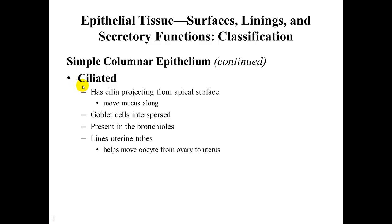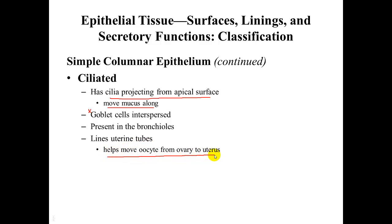The ciliated simple columnar epithelial has cilia projecting from the apical surface and is used for motion — it moves mucus along the surface. Goblet cells produce the mucus. These are often present in the bronchioles and lining the uterine tubes, helping to move the oocyte from the ovary to the uterus.